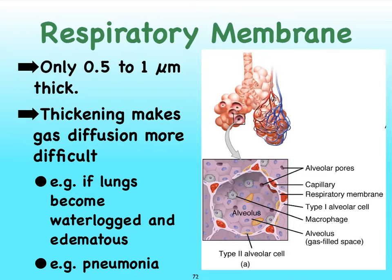Typically, in a healthy situation, the respiratory membrane — remember, which is made up of the simple squamous epithelium of our alveoli and then the simple squamous epithelium of the capillaries surrounding these alveoli — it is pretty thin. It's only a half a micrometer to about a micrometer thick. Remember that the diameter of a red blood cell is about seven to eight micrometers, so this is like an eighth, if not a sixteenth, the size of that — quite small.